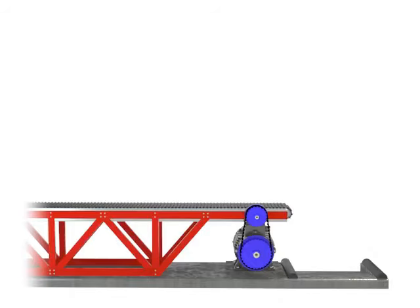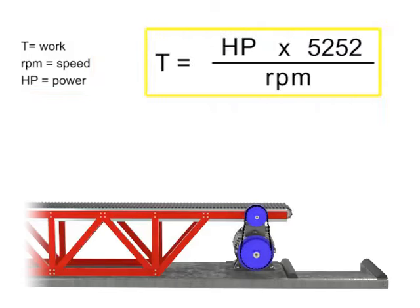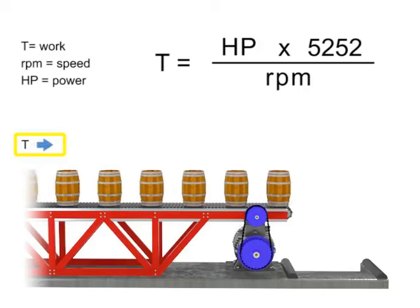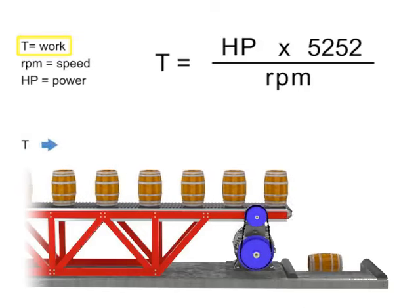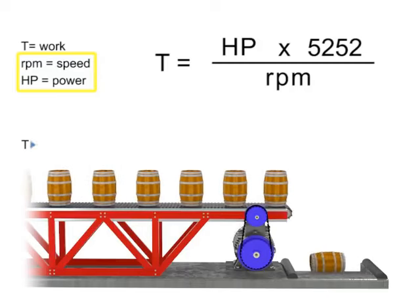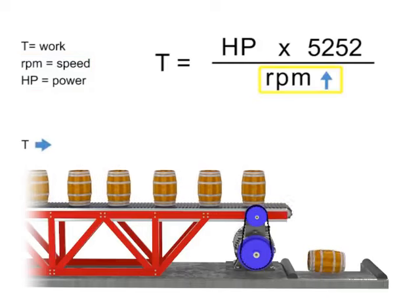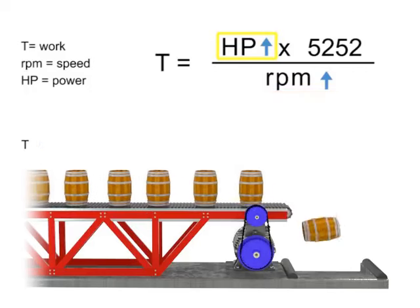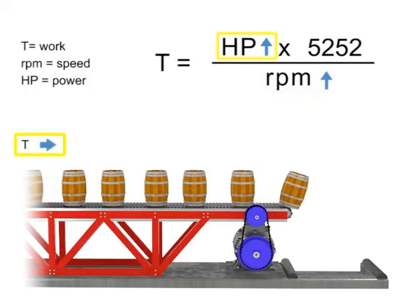You can manipulate the connection among speed, torque, and horsepower by understanding how they are related. The work accomplished here, the torque, is represented by the weight moving along the conveyor. If torque remains constant, speed and horsepower are proportional. As the speed, or RPM, increases, horsepower increases to maintain constant torque.